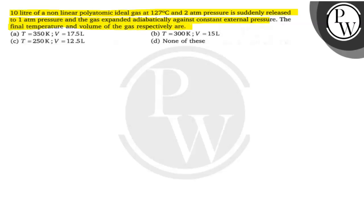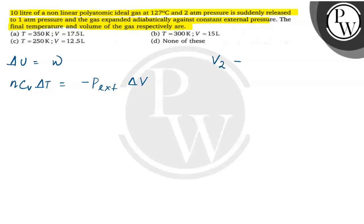Since it is an adiabatic process, ΔU is equal to w. So, nCvΔT is equal to minus P_external into ΔV. In place of ΔV, it will be V2 minus V1, or it will be nRT2 upon P2 minus nRT1 upon P1.